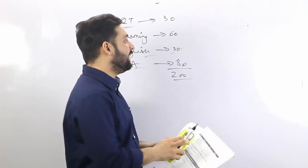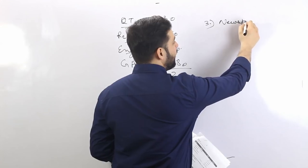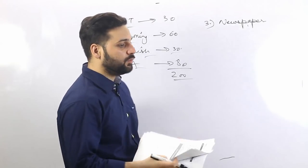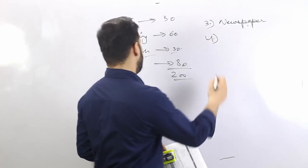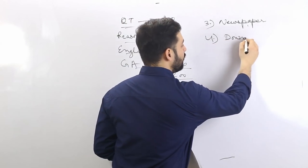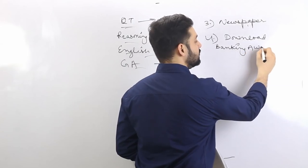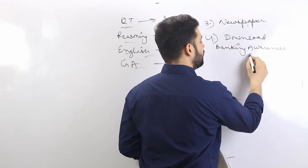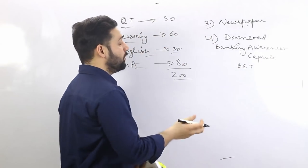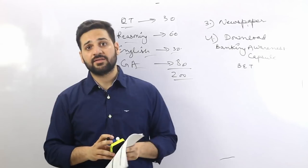The third step is to read newspapers every day. And what else you can do: we actually prepare notes for the general awareness and banking awareness section. Download the monthly banking awareness capsule from Bank Exams Today. These are the four sources of study material recommended for the general awareness section.